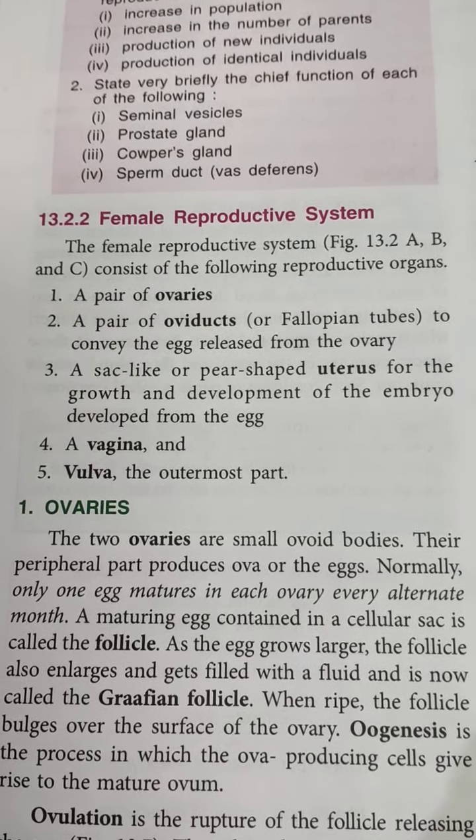Ovaries are small ovoid bodies. Their peripheral part produces ova or eggs. Normally only one egg matures in each ovary every alternate month. This is very important because when we get to the menstrual cycle part, you will understand why it is so important to know about it.